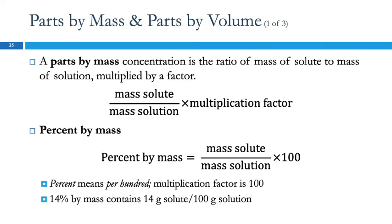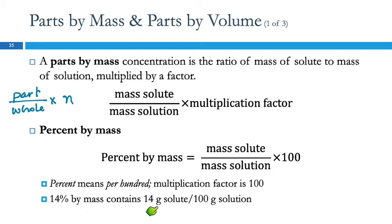Then we have parts by mass or parts by volume. This is basically the part over the whole — the parts you're interested in divided by the whole thing, times a factor. Parts by mass: mass of solute divided by the mass of the whole solution. If we want percent, we multiply by 100, because percent literally means per hundred. So 14% by mass means 14 grams of solute per 100 grams of solution — as long as the two units are the same, they'll cancel out.